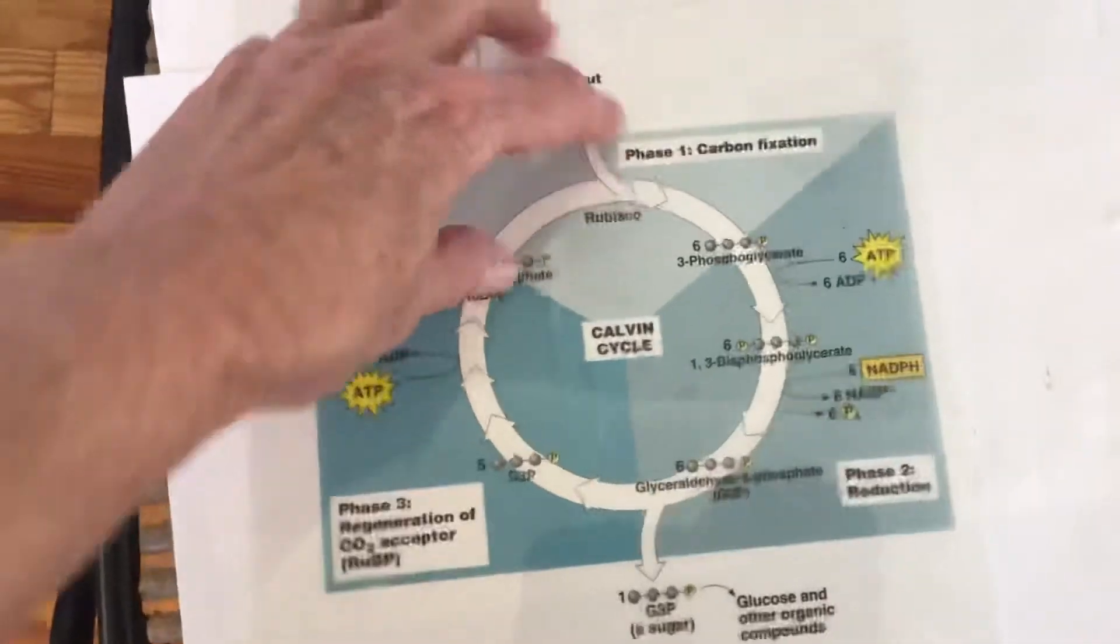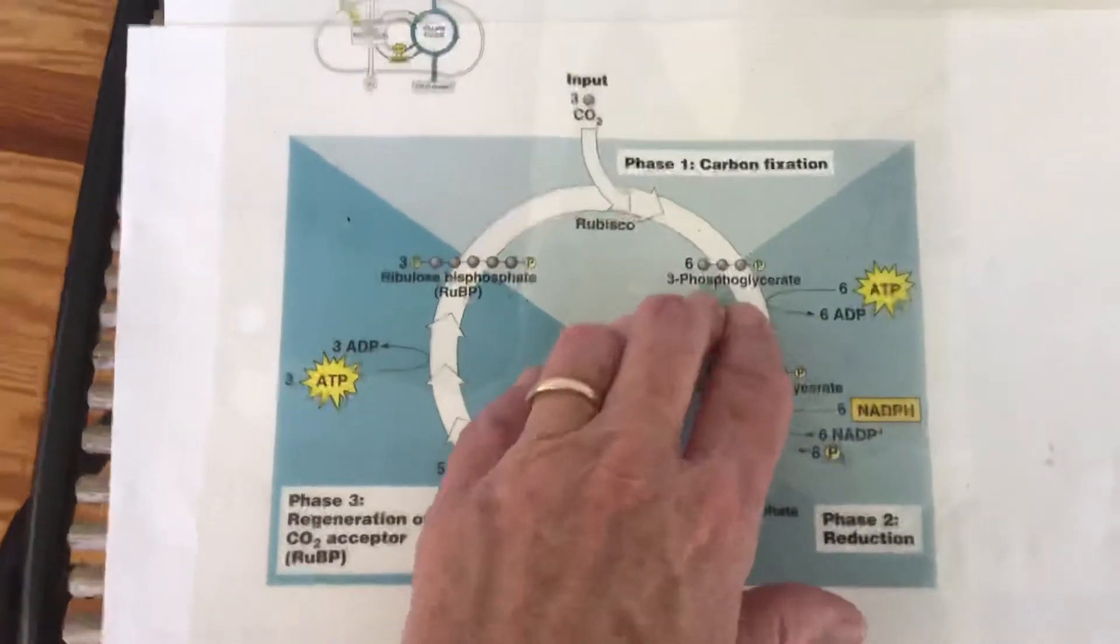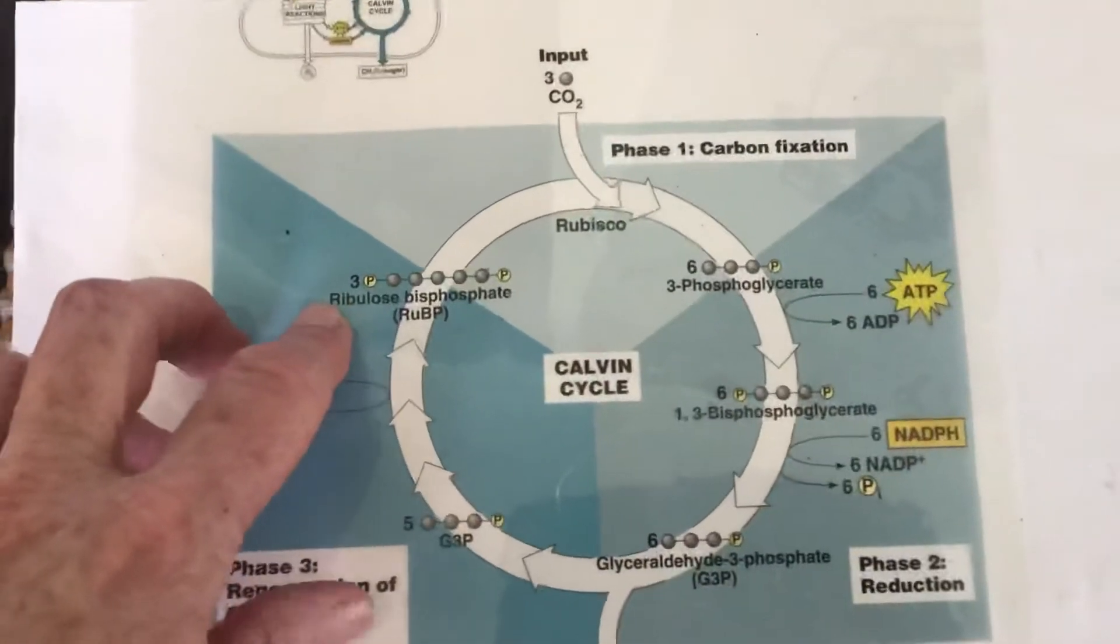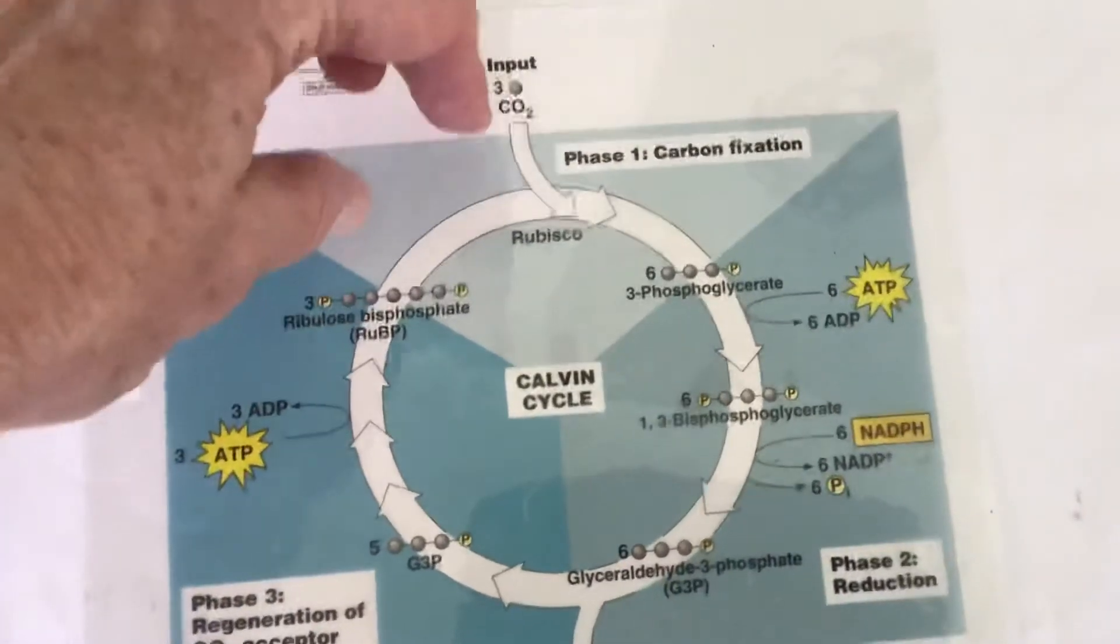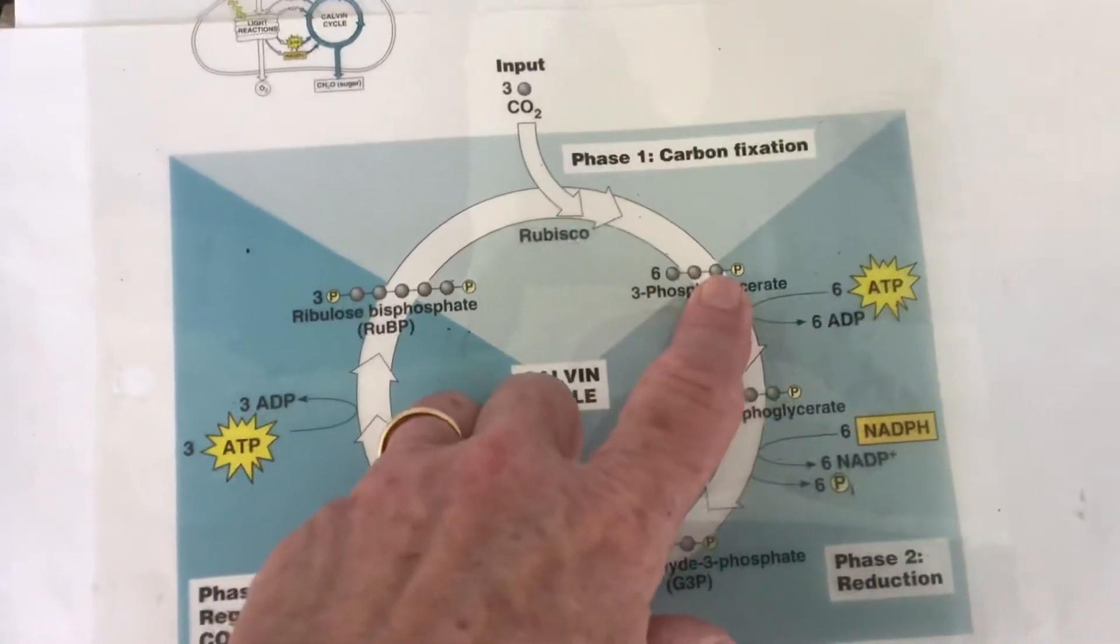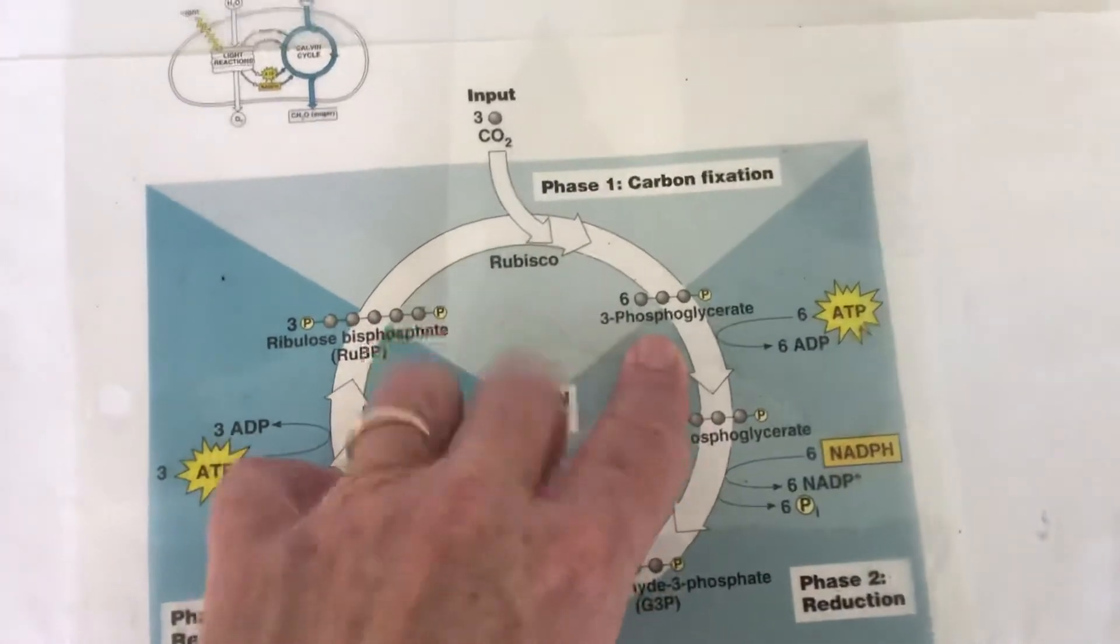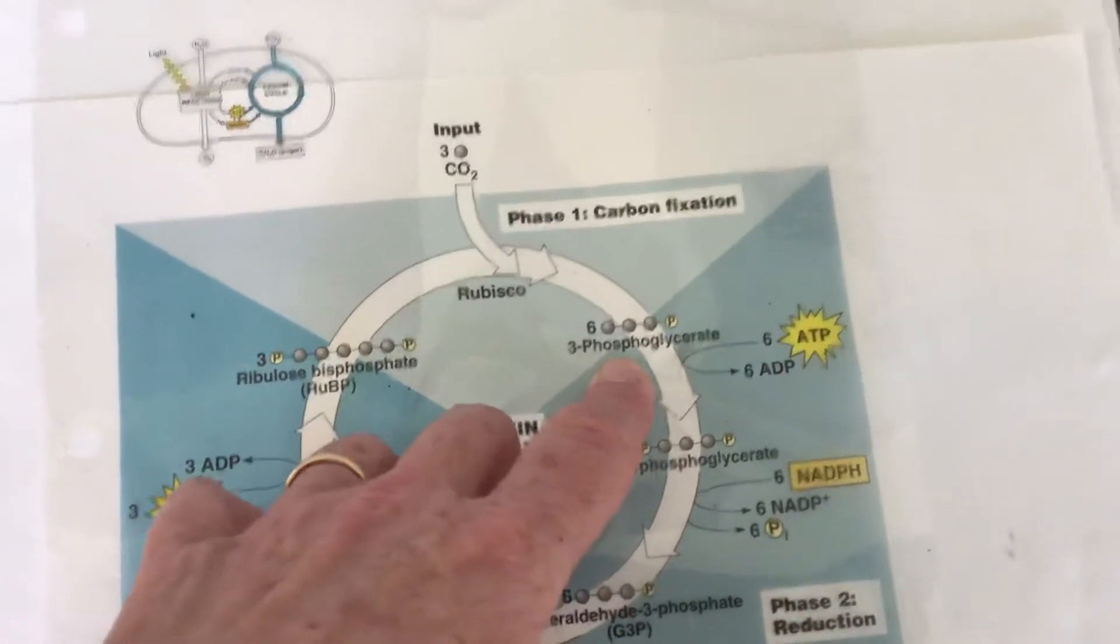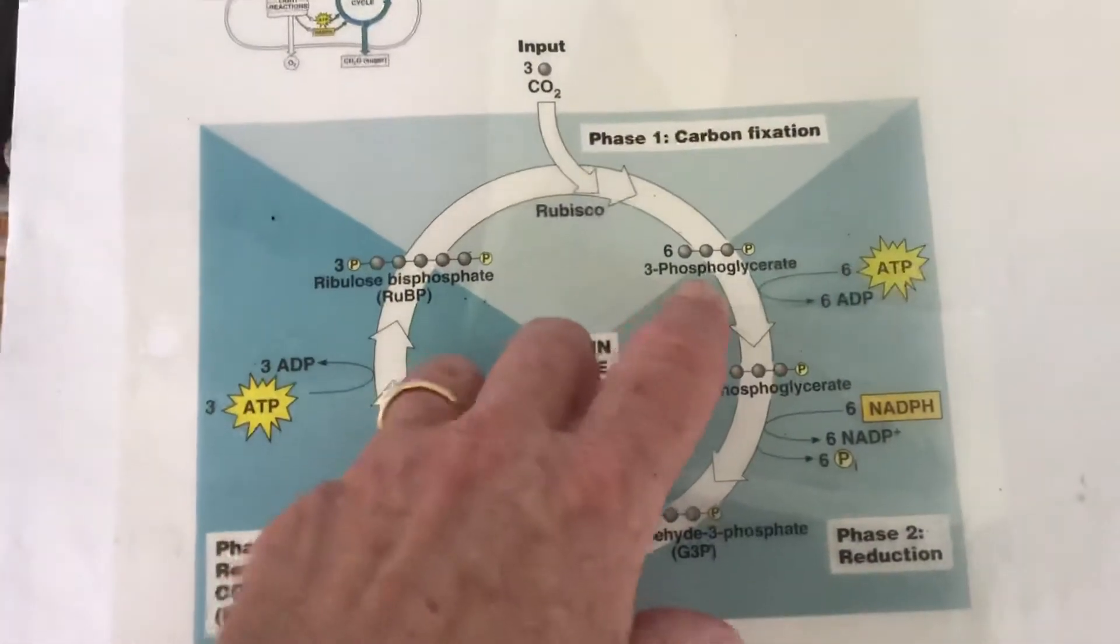So when I do that, that is when those two things are joined together, I get six carbon molecules that then immediately will be broken down into two, three-carbon pieces. So if you look at the numbers here, if I start with three ribulose bisphosphate and add three carbon dioxide, that gives me three, six-carbon molecules so that when I break them in half, I'm going to get six, three-carbon molecules. This first one is called phosphoglycerate or phosphoglyceraldehyde, and that is also called PGAL.